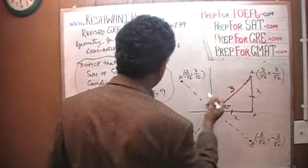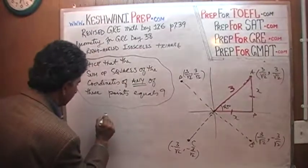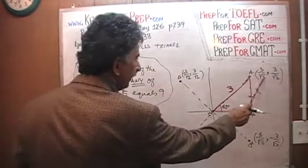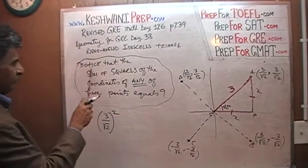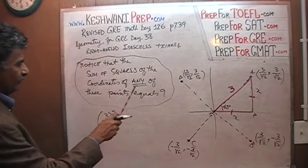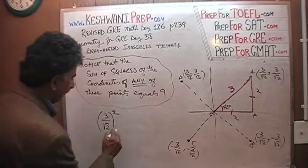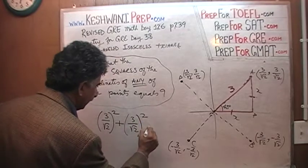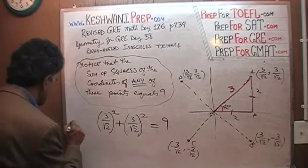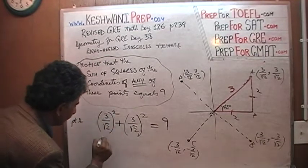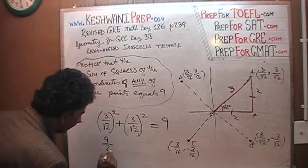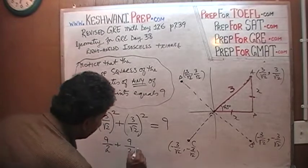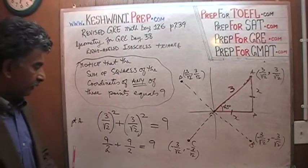Let's find out. For example, the coordinates of A are 3 over root 2 and 3 over root 2. You take the square of the x-coordinate of point A. The sum of the squares means we also square the y-coordinate, which is 3 over root 2. We are claiming that equals 9. Let's verify: 3 squared is 9, the square of root 2 is 2, so we get 9 over 2 plus 9 over 2, which is 18 over 2, which is 9.